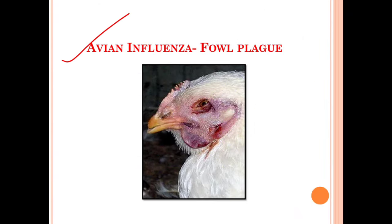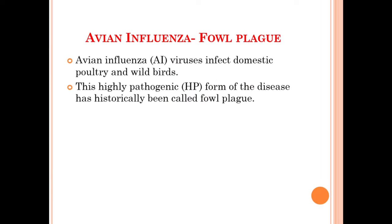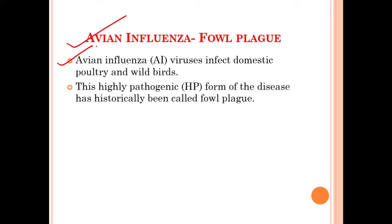Hello everyone. In this video we will discuss about avian influenza, also known as fowl plague. The avian influenza viruses infect domestic poultry birds and wild birds. This highly pathogenic form of the disease has historically been called fowl plague. The avian influenza virus has two forms: one is the low pathogenic form and one is the highly pathogenic form.